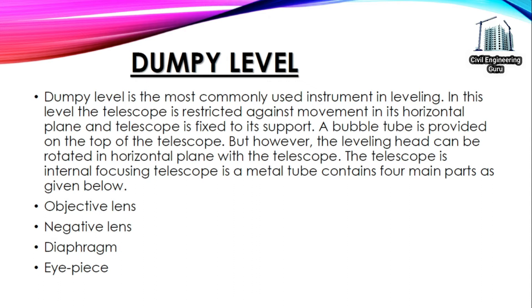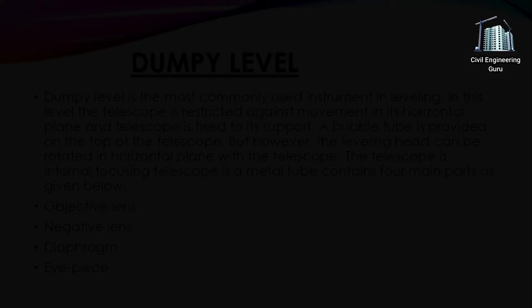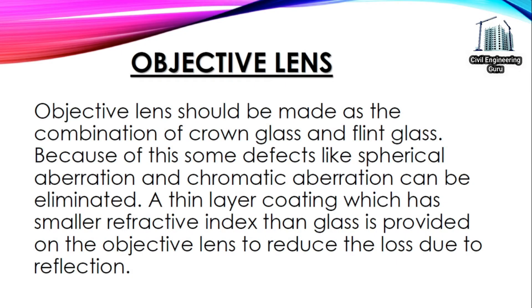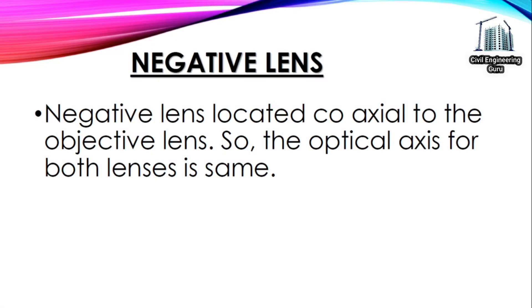The internal focusing telescope is a metal tube containing four main parts: objective lens, negative lens, diaphragm, and eyepiece. The objective lens is made as a combination of crown glass and flint glass so that defects like spherical aberration and chromatic aberration can be eliminated. A thin coating layer with a smaller refractive index than glass is provided on the objective lens to reduce reflection loss. The negative lens is located coaxial to the objective lens so the optical axis for both lenses is the same.